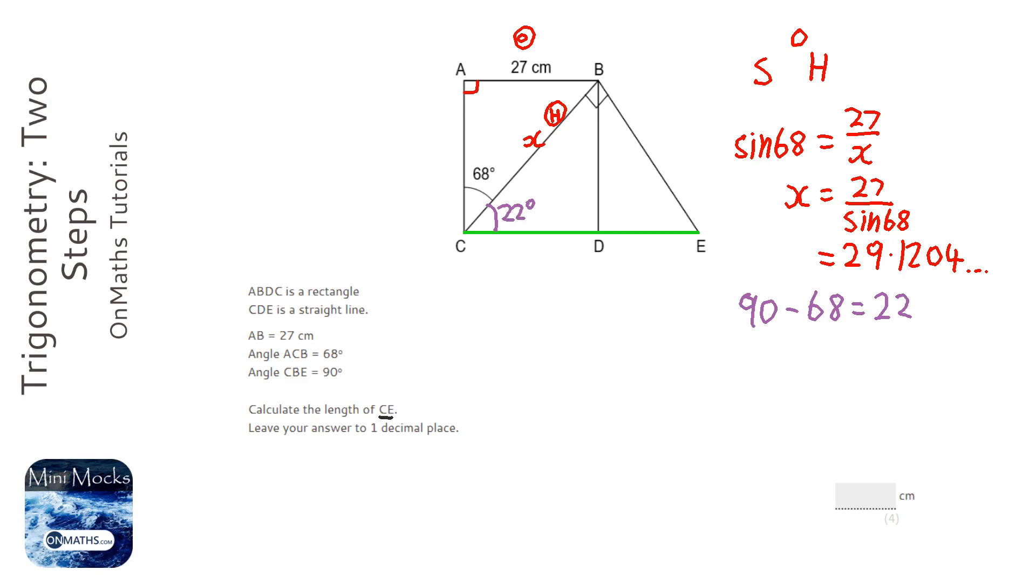Now I'm looking for this one, so CE. I'm going to call CE y. And I've got, so what have I got? I've got the adjacent here, so this is now the adjacent, and I've got the hypotenuse because this is opposite the right angle.